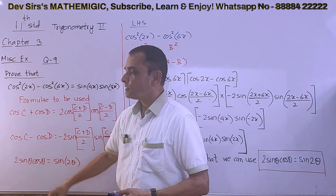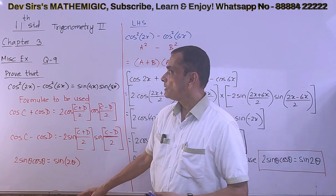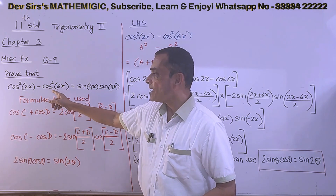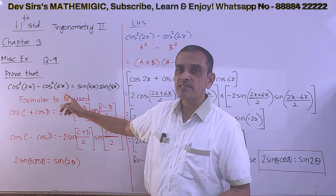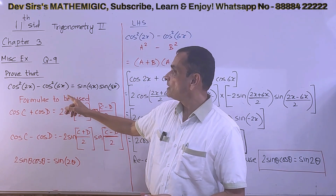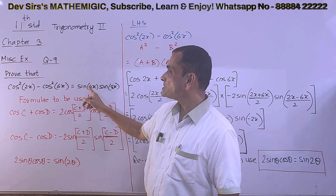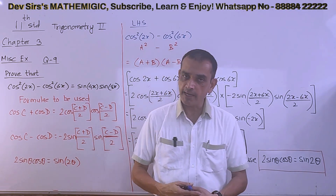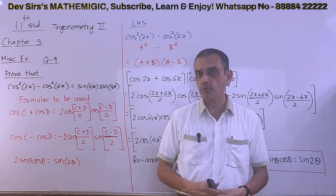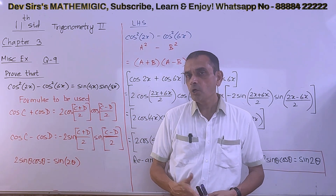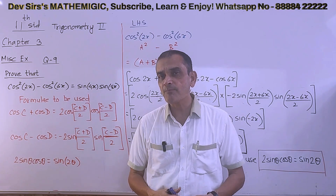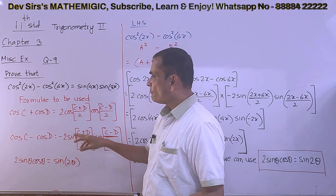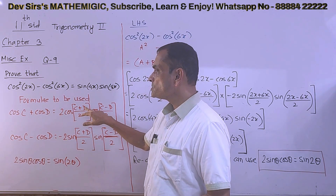Prove that cos squared 2x minus cos squared 6x is equal to sin 4x into sin 8x. That is the problem. Now look at what is written in the key step: formulae to be used.